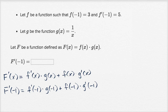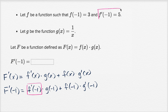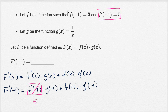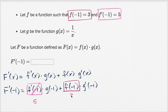Now let's see if we can figure these things out. F prime of negative one — they tell us right over here, f prime of negative one is equal to five. So this is equal to five. And what is f of negative one? Well they tell us right over here, f of negative one is equal to three.